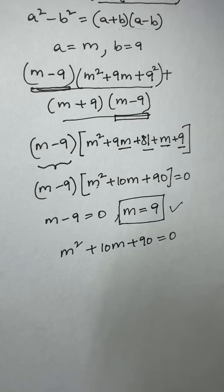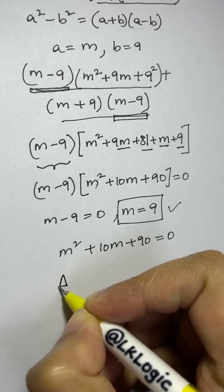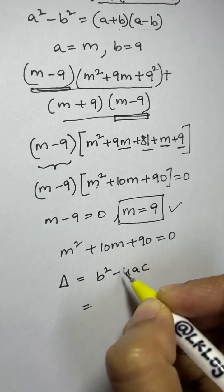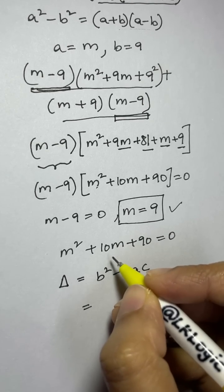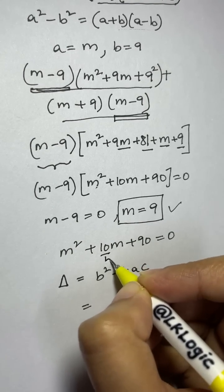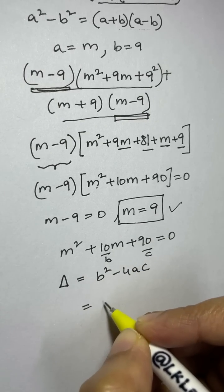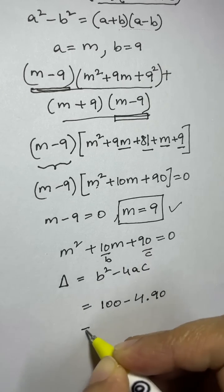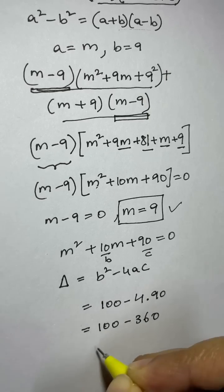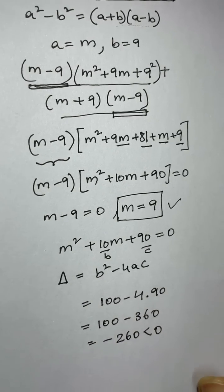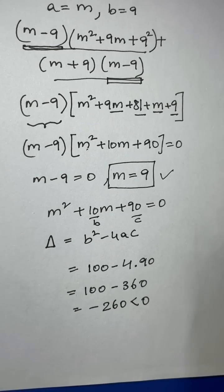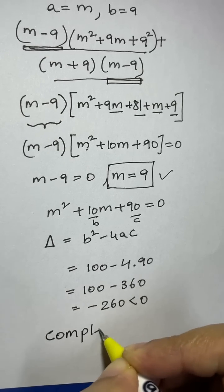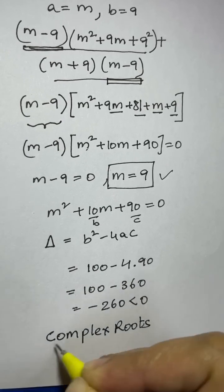Let's check the discriminant, written as delta: b squared minus 4ac. Here a equals 1, b equals 10, and c equals 90. Substituting: 10 squared is 100, minus 4 times 1 times 90 is 360. So the discriminant is 100 minus 360, which equals negative 260 — less than zero.